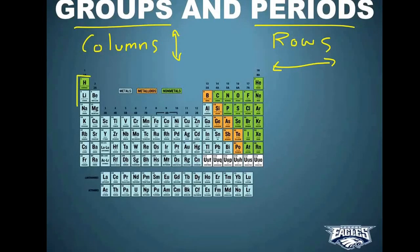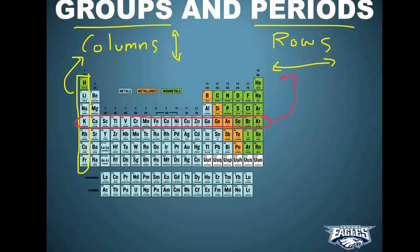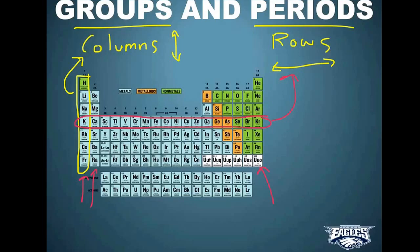So this guy right here is a column, and then this guy over here is a row. Groups group elements according to properties. So everything in group number one has similar properties, everything in group number two has similar properties, and everything in group number 18 has similar properties. And it has a lot to do with the number of outer level electrons called valence electrons, which we'll get to later in the video.